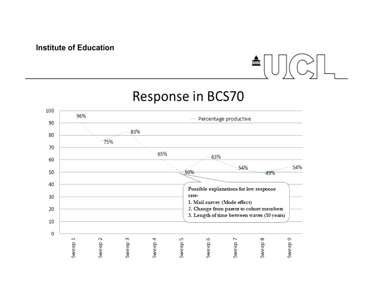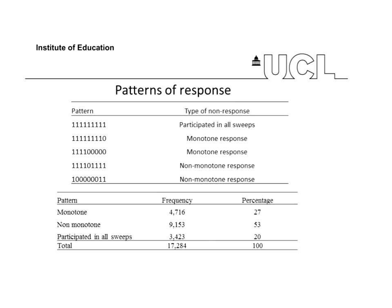The BCS70 sample response rate started at 96% in the first sweep and the number started declining, though not always permanently. In sweep nine we have 54% of the entire sample having participated. The largest decline was between sweeps four and five — in sweep four respondents were aged 16, in sweep five they were 26, so the gap between the two sweeps is 10 years. Sweep four was a face-to-face survey while sweep five was a postal survey, which is usually less reliable. And there was a change in the responsibility of responding — in sweep four, parents were deciding on behalf of cohort members who were 16, but in sweep five the cohort members were 26 and had to decide for themselves.